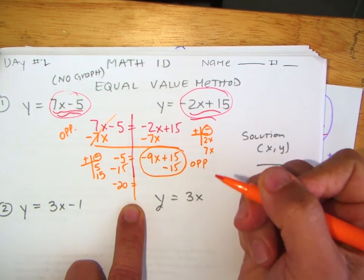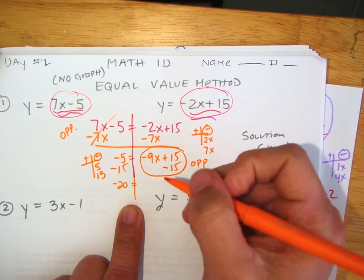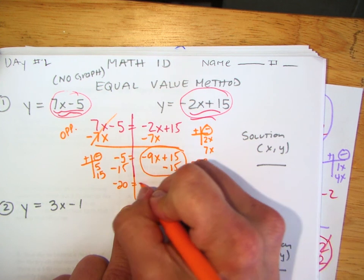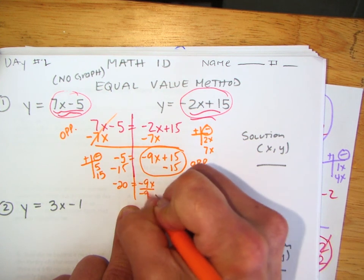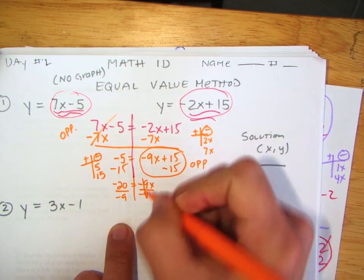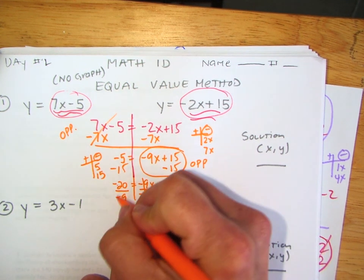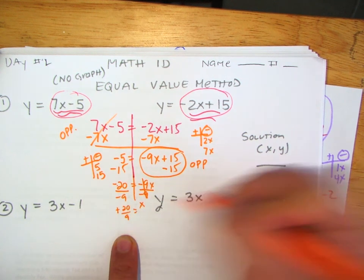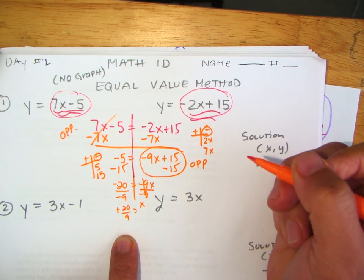So negative 20 equals negative 9x. There's a fraction — I didn't want a fraction, but it's okay, let's just work it out. Divide by negative 9 on both sides, and x equals negative 20 over 9. And that's my x.